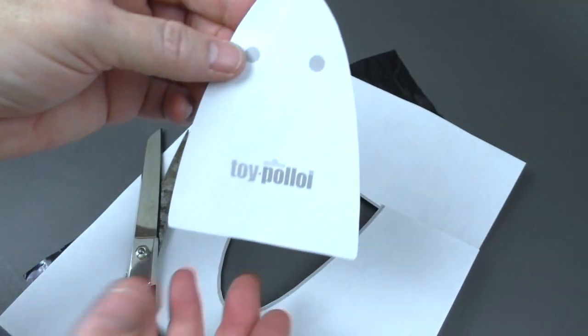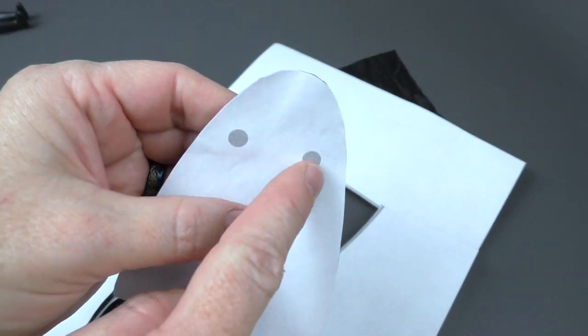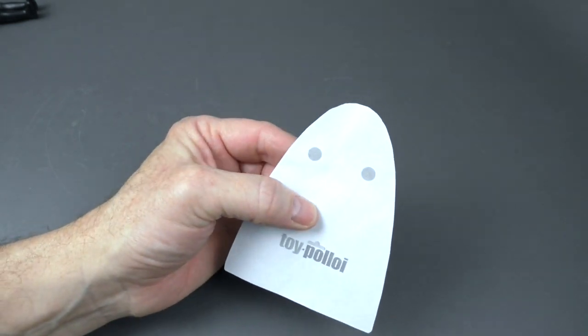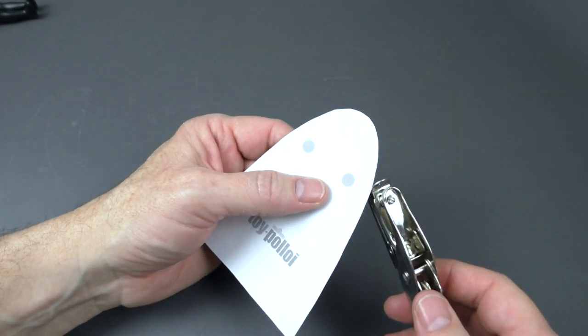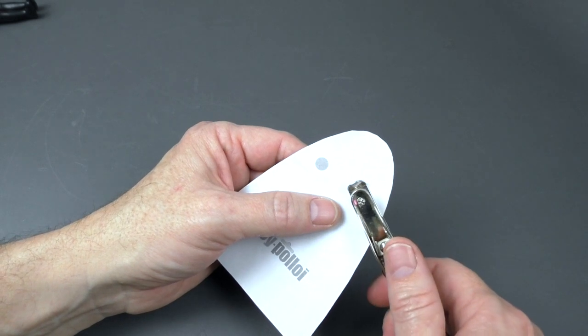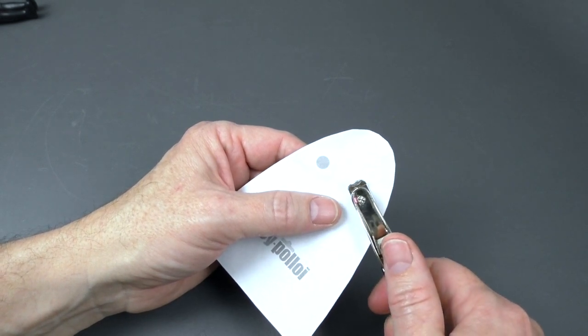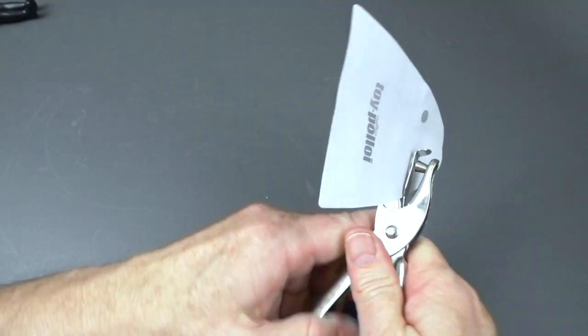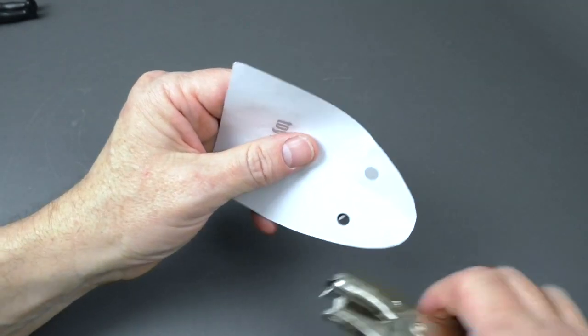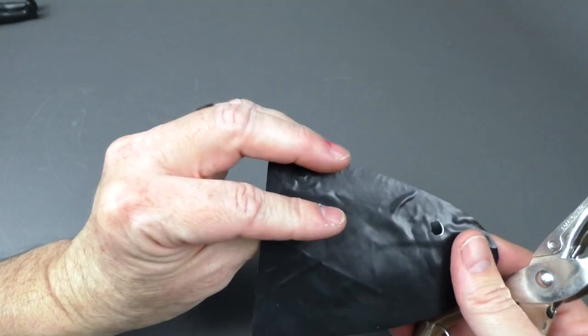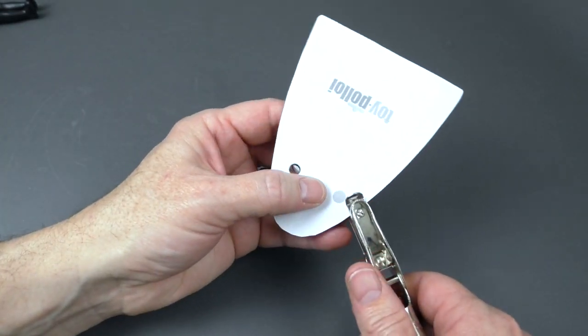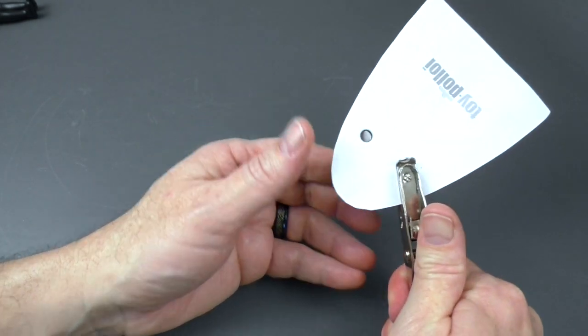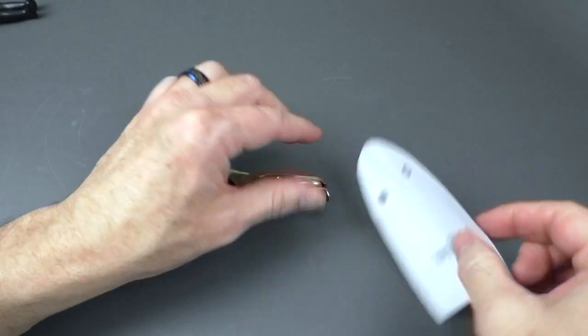All right. Looks good so far. Now I need to punch holes. And the best way to punch holes in this is to use a hole puncher. Of course. And it's a perfect fit. Just like that. And then the other side.